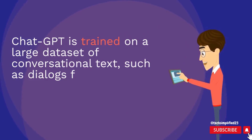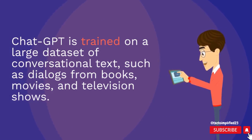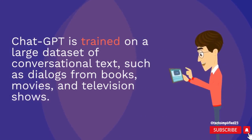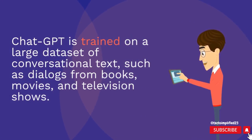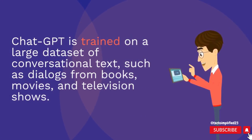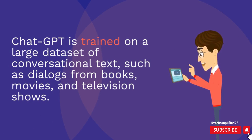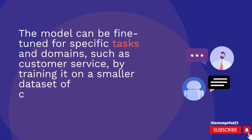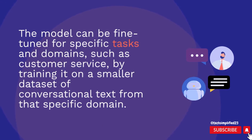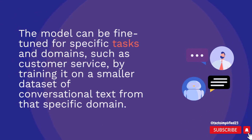ChatGPT is trained on a large dataset of conversational text, such as dialogues from books, movies, and television shows. The model can be fine-tuned for specific tasks and domains, such as customer service, by training it on a smaller dataset of conversational text from that specific domain.